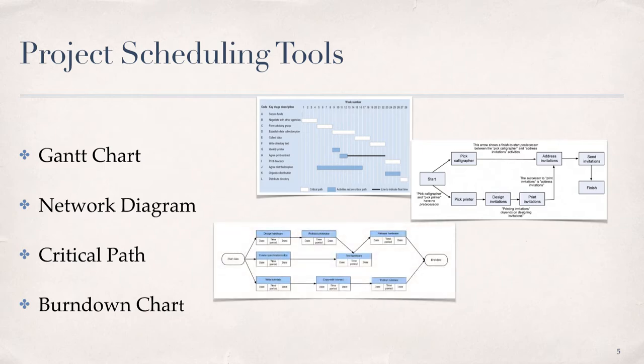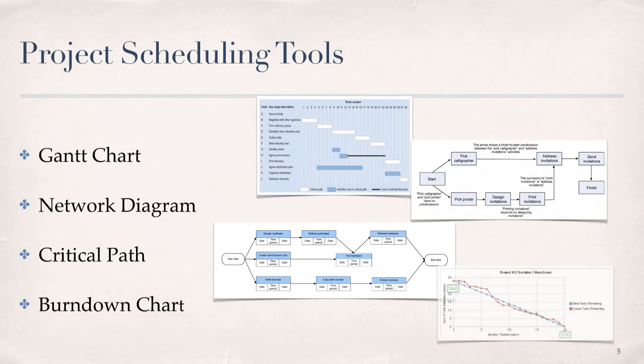Critical path describes the sequence of tasks that would enable the project to be completed in the shortest possible time. A burndown chart is a graphical representation of work left to do versus time: outstanding work is shown on the vertical axis and time on the horizontal. It is a run chart of outstanding work useful for predicting when all of the work will be completed. Be sure to complete both assigned readings for this module to fully understand the benefits and limitations of each tool.